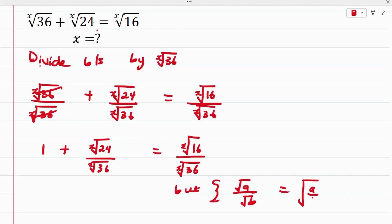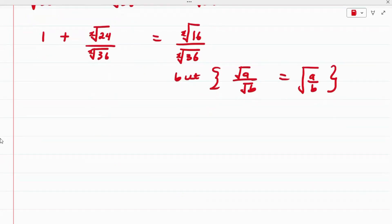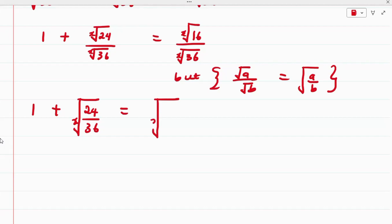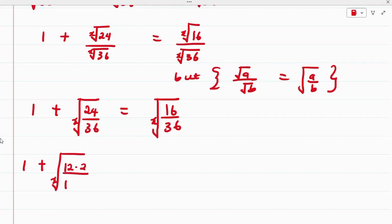Applying this property, we have 1 plus the x-root of 24 over 36 equals the x-root of 16 over 36. Now 24 can be expressed as 12 × 2 and 36 as 12 × 3, and 16 can be expressed as 4 × 4 and 36 as 4 × 9.